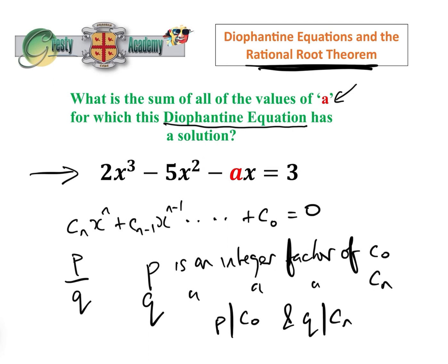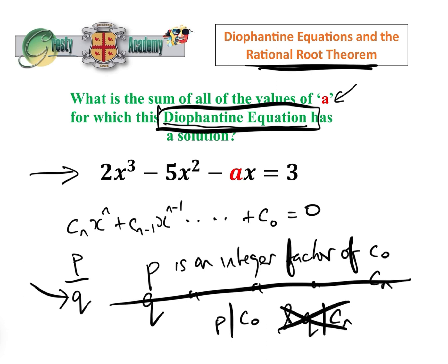Now, we're not looking for rational solutions here, because we're told this is a Diophantine equation, so we're only looking for integer solutions. Now an integer, therefore, by definition q is going to be 1, so we can ignore that part of the Rational Root Theorem and this part, and all we're left with is that in order to have an integer solution, p must divide c0.